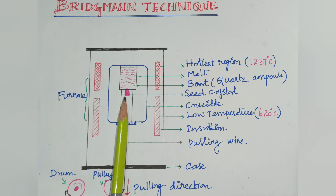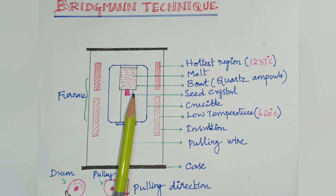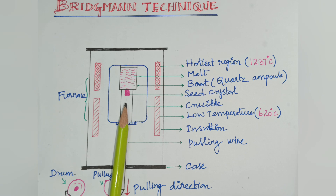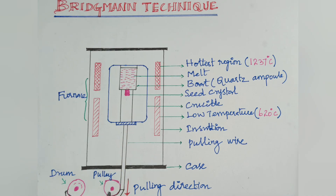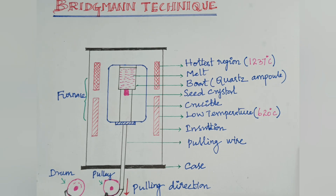The single crystal is formed at the tip of the crucible because of the temperature gradient. The crucible is moved at a rate of 1 mm per hour, slowly moved toward the lower temperature zone, and the single crystal is formed at the tip of the seed-like crystals.